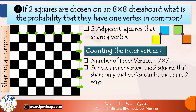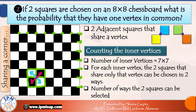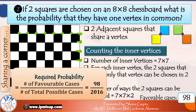For each vertex, the two squares that share it can be selected in two ways. For example, if I pick this green vertex then there are four squares surrounding it. We can pick this square and this square — they share exactly one corner — or we can pick this square and this square — they also share exactly one corner. For each selection of a vertex the two squares can be picked in two ways. So our total favorable outcomes for the event that the two selected squares share exactly one vertex is 2×49, that is 98. The required probability is 98 upon 2016.